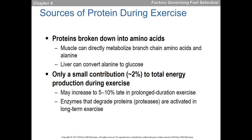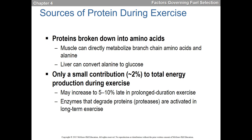Sources of protein during exercise: proteins are broken down into amino acids, and branched-chain amino acids seem to be the main contributors. Typically only a small contribution — around 2% — but as exercise gets longer, it can increase to 5%, 10%, or even 15% of energy. Mostly this involves conversion of certain amino acids into glucose and into intermediates within the Krebs cycle. We've already covered the Cori cycle and lactic acid as a fuel, so go read through those slides. I'll see you in the next lecture.